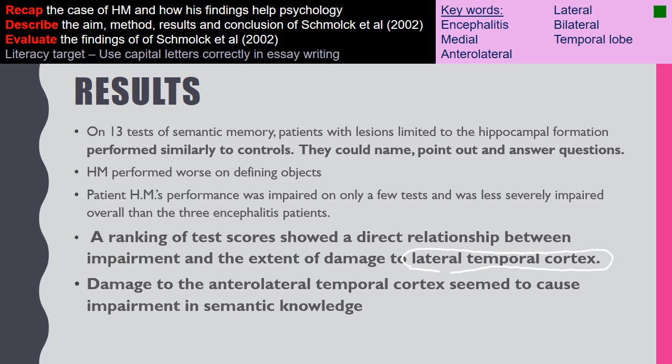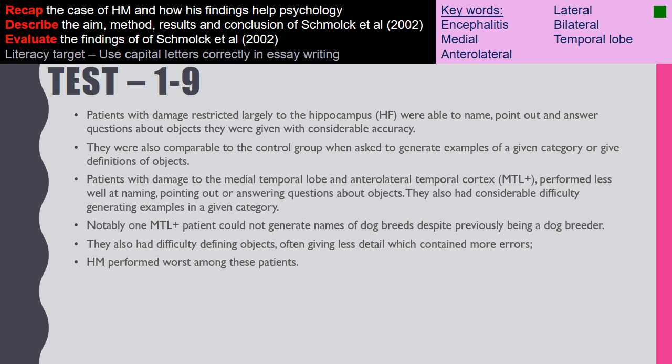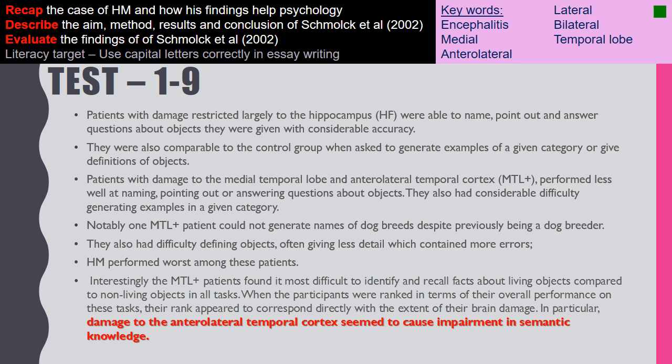Damage to the anterior lateral temporal cortex appeared to cause impairment in semantic knowledge. Patients with damage restricted largely to the hippocampus were still able to name, point out, and answer questions with considerable accuracy, comparable to the control group when generating category examples or definitions. Patients with damage to both the medial temporal lobe and the anterior lateral temporal cortex performed less well — notably, one patient couldn't generate the names of dog breeds despite having previously been a dog breeder.